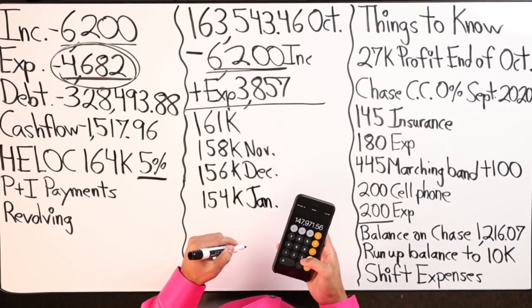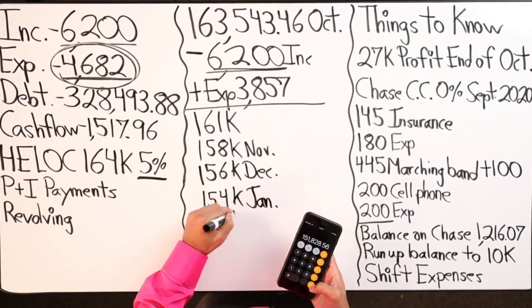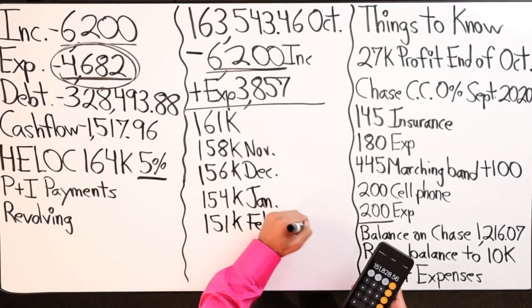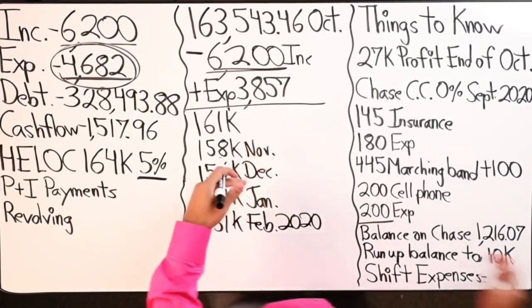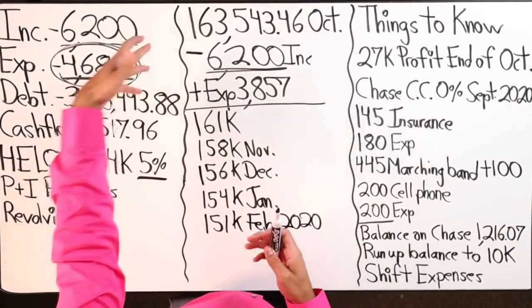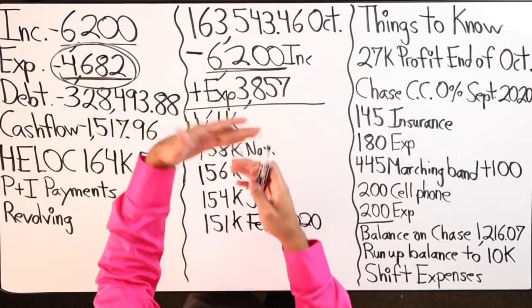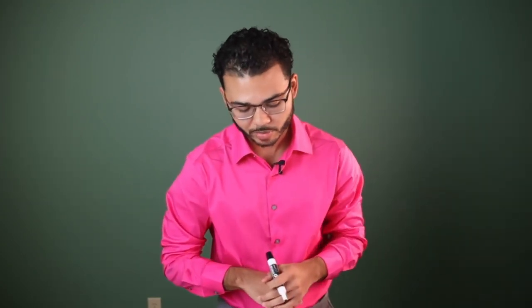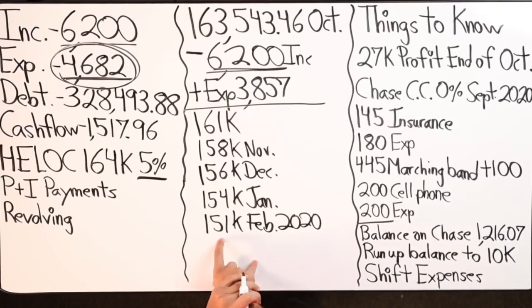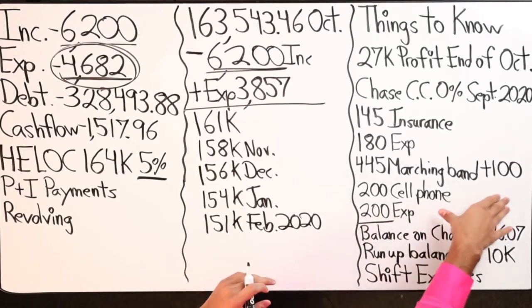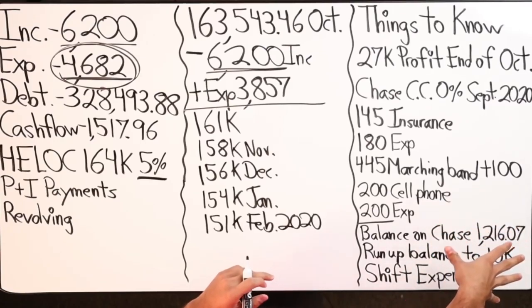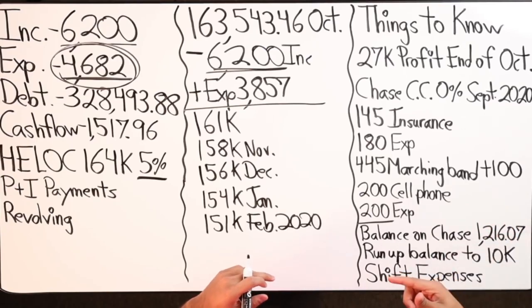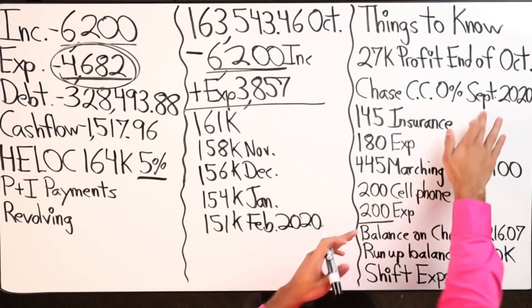Income goes in, expenses come out for January and February. By the end of February 2020, the balance is approximately $151,000. Meanwhile, the 0% Chase credit card still has plenty of time before interest kicks in, and we're just paying the minimum while earning cash back rewards.